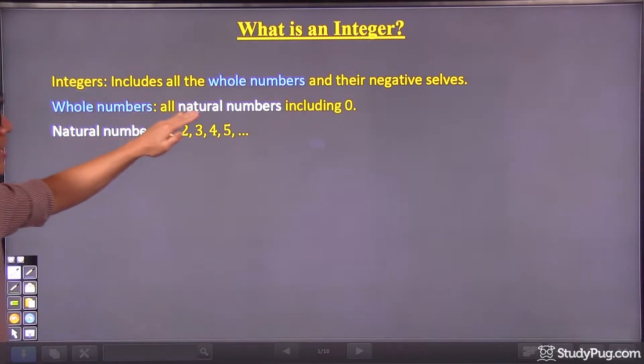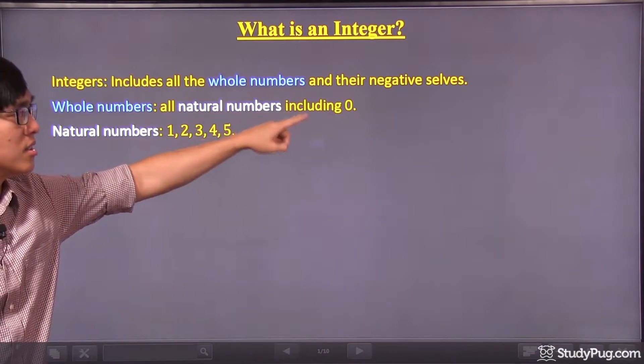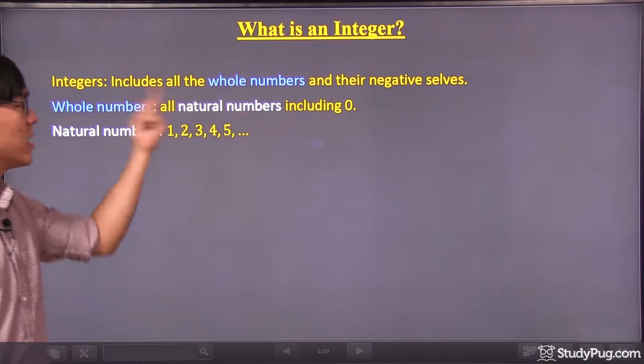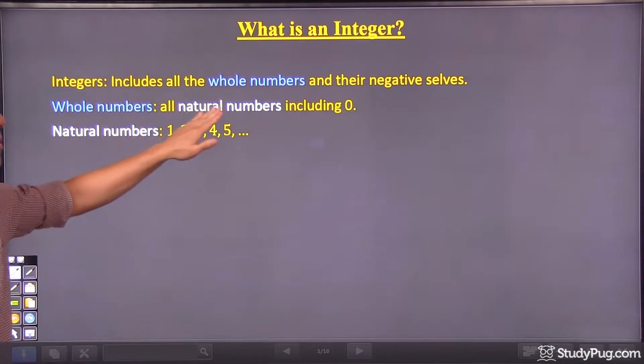Whole numbers are all natural numbers including the zero. Again, we need to know what natural numbers are before we understand the whole numbers. So let me define natural numbers as well.